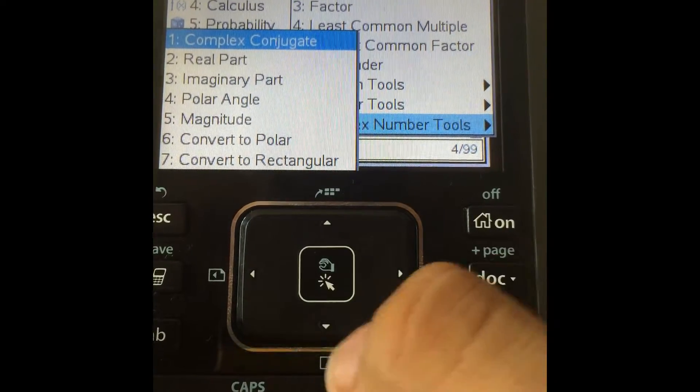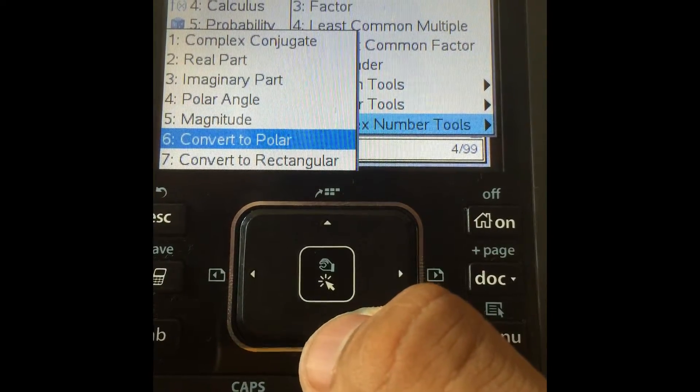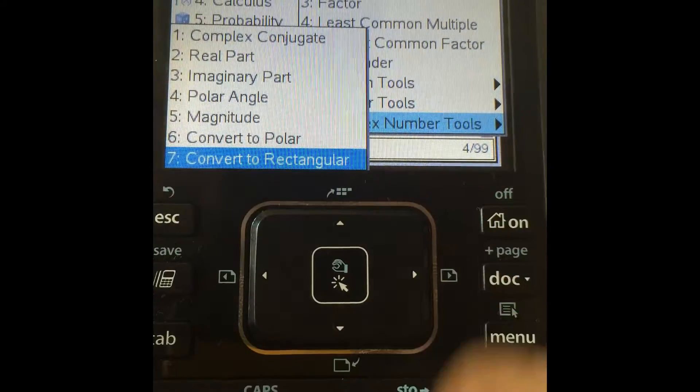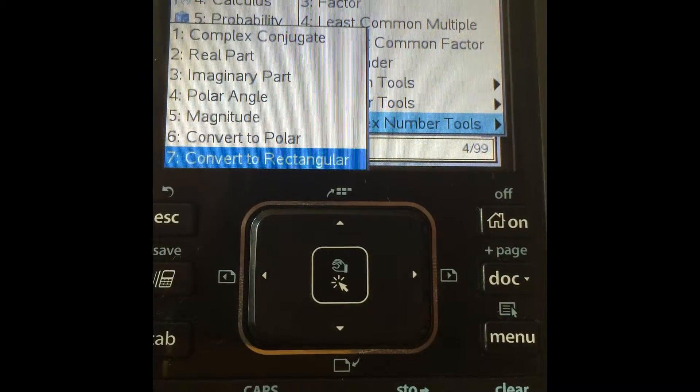Under the complex number tools, you also have convert to polar, which gives you the polar form right away. And then the magnitude option, rectangular is just like your Cartesian coordinate.